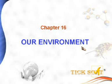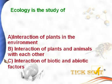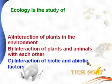Chapter 16: Our Environment. Ecology is the study of — options: (a) interaction of plants in the environment, (b) interaction of plants and animals with each other, (c) interaction of biotic and abiotic factors. Ecology is the study of interaction of biotic and abiotic factors — biotic means living and abiotic means non-living. So option C is the answer.